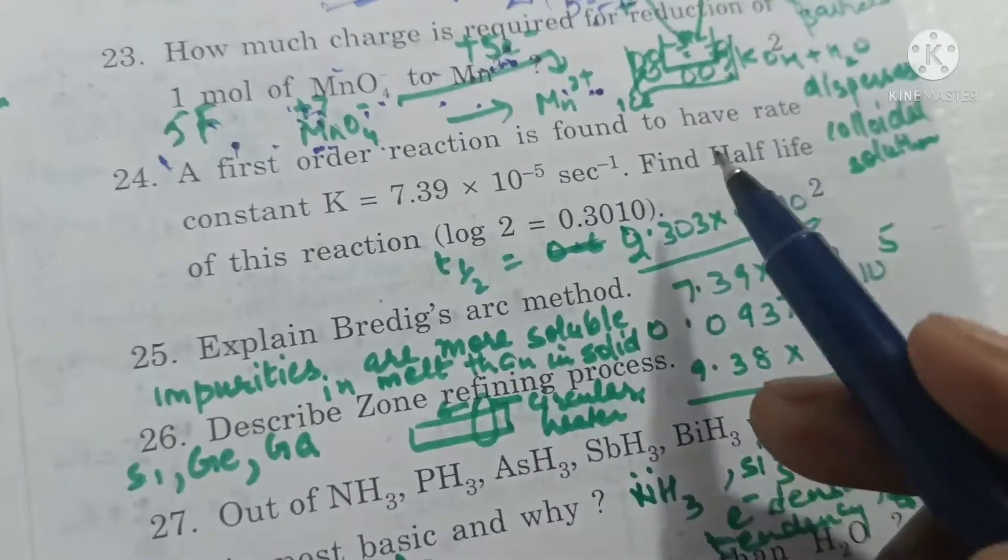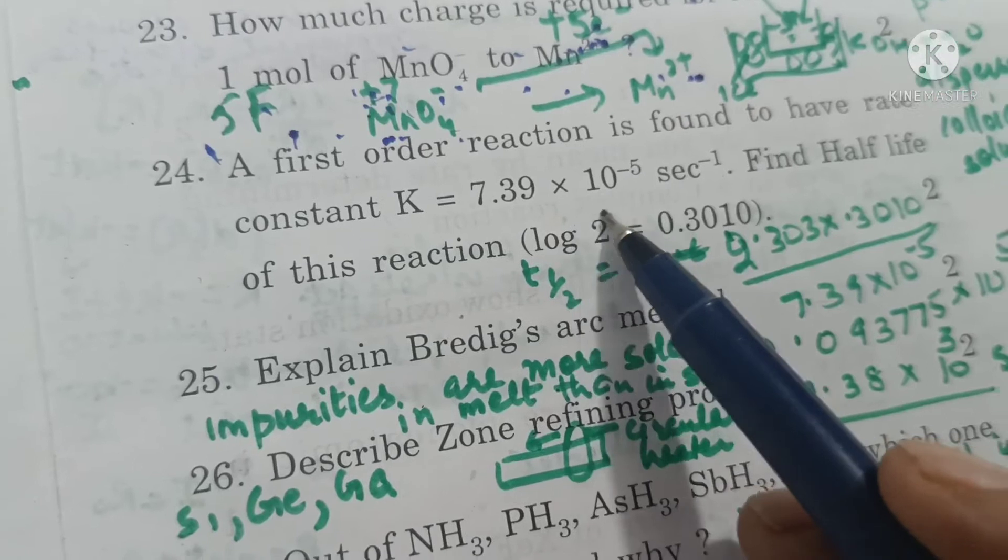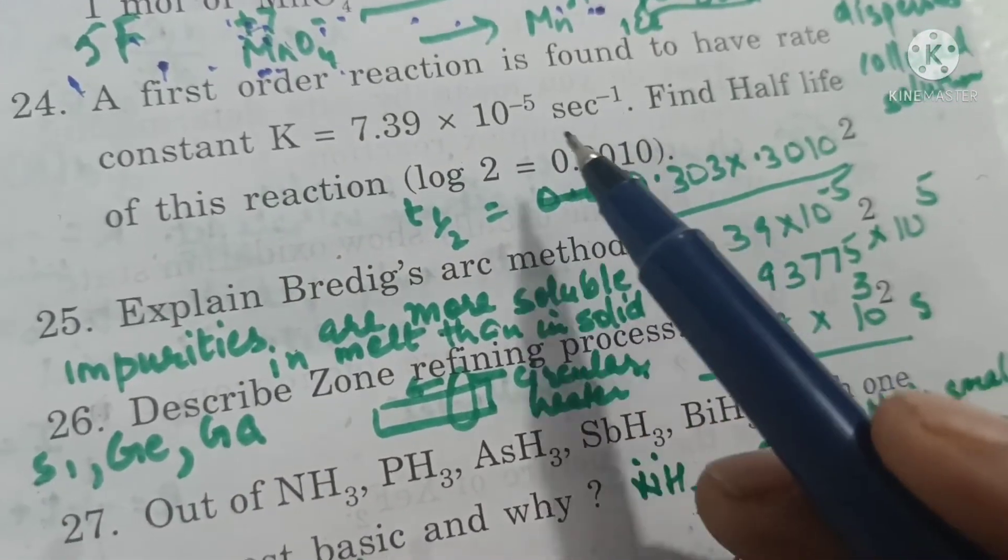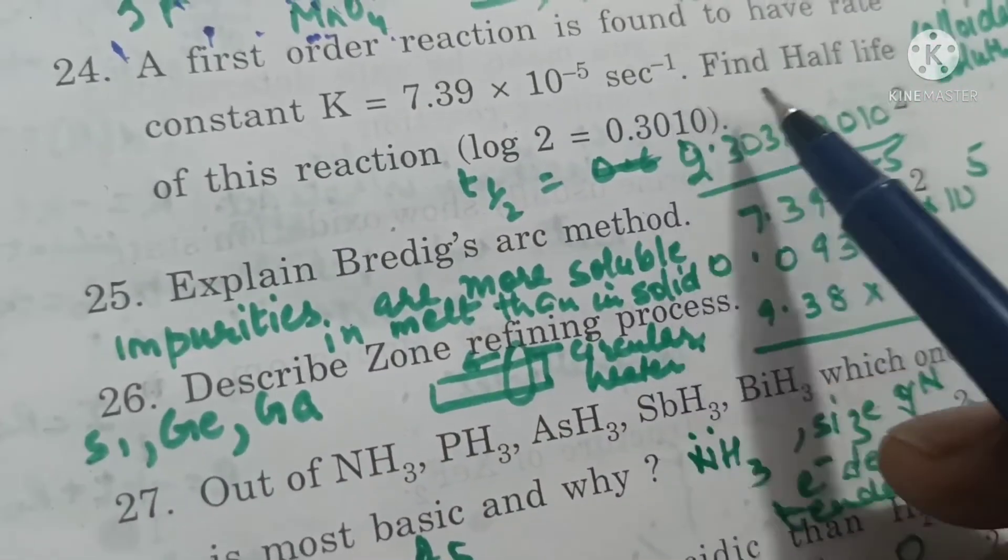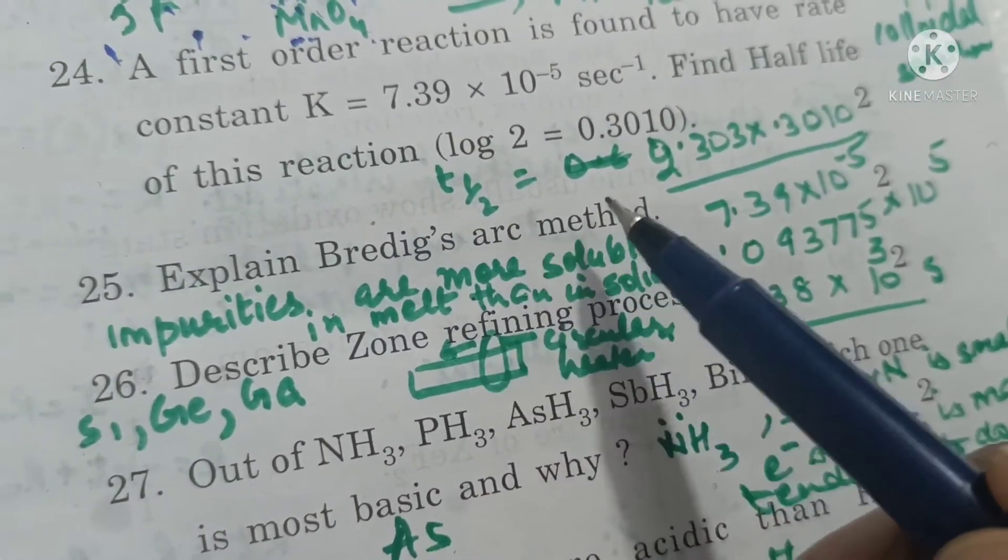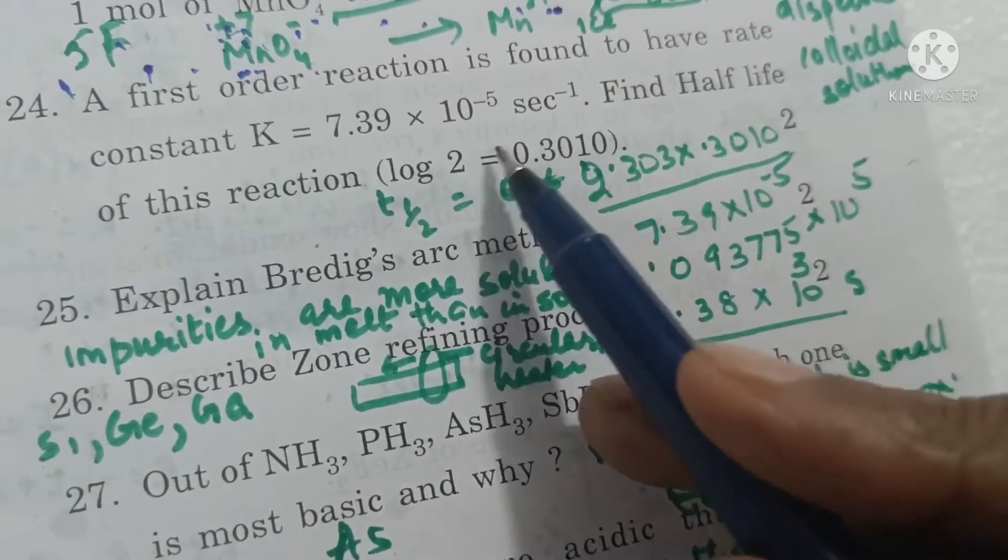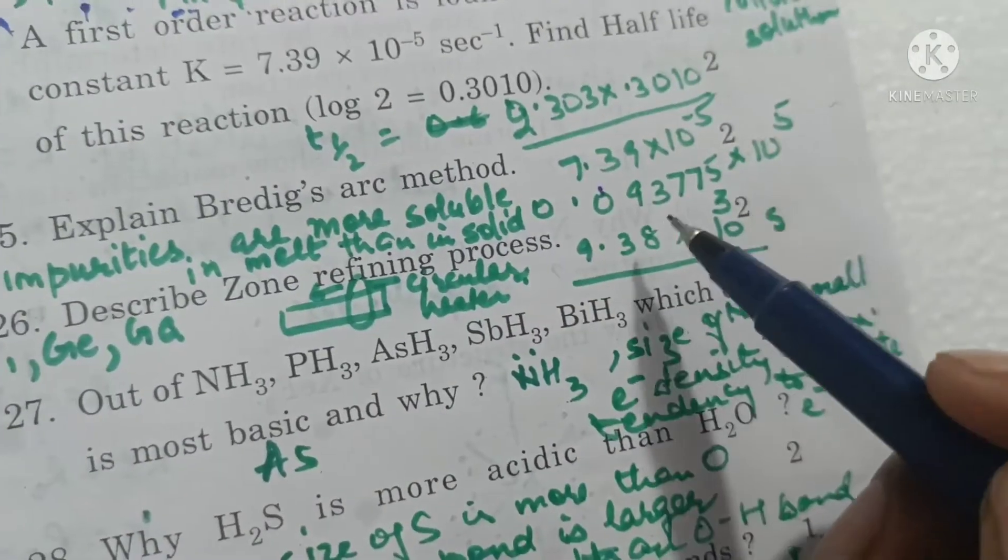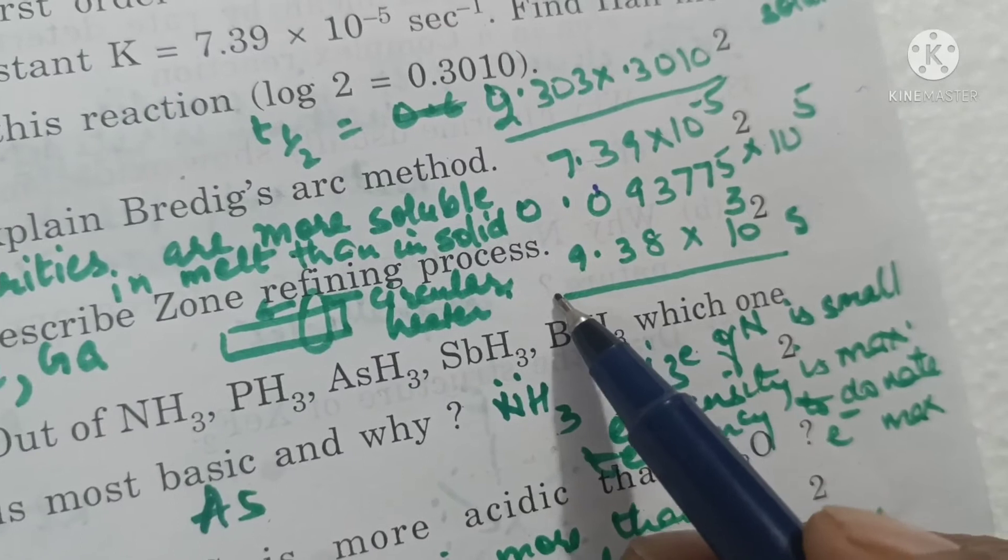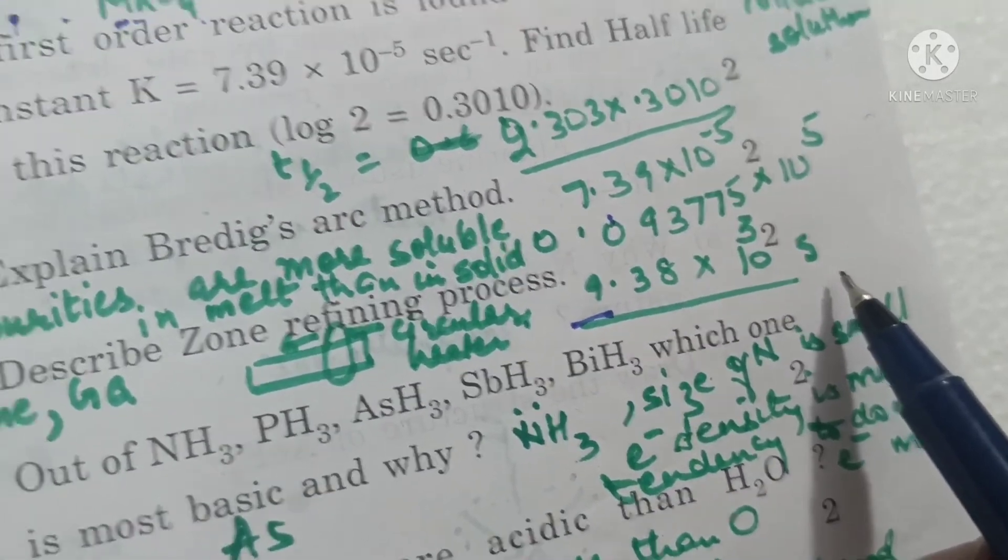A first order reaction is found to have rate constant K equals 7.39 into 10 raised to power minus 5 seconds inverse. Find half life of this reaction. We know that half life equals 0.693 upon K. On solving we get the answer 9.38 into 10 raised to power 3 seconds.